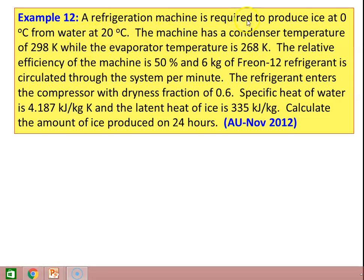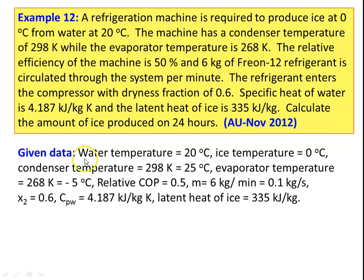We take Example 12. A refrigeration machine is required to produce ice at 0°C from water at 20°C. The condenser temperature is 298 K (25°C) and evaporator temperature is 268 K (minus 5°C). Relative efficiency is 0.50, and 6 kg/min (0.1 kg/s) of Freon refrigerant is circulated. The refrigerant enters the compressor with dryness fraction X2 = 0.6. Specific heat of water = 4.187 kJ/kg·K, latent heat of ice = 335 kJ/kg. Calculate the amount of ice produced in 24 hours.